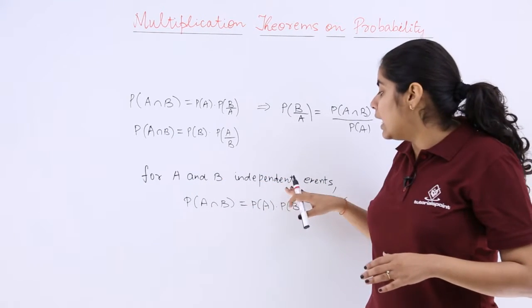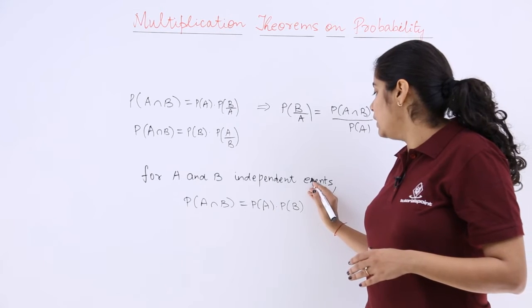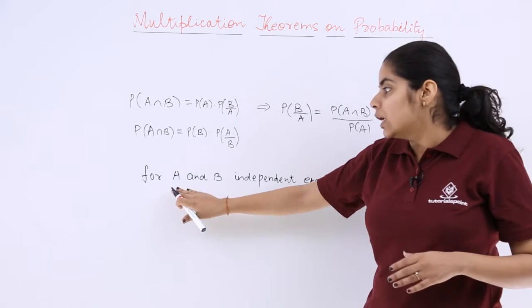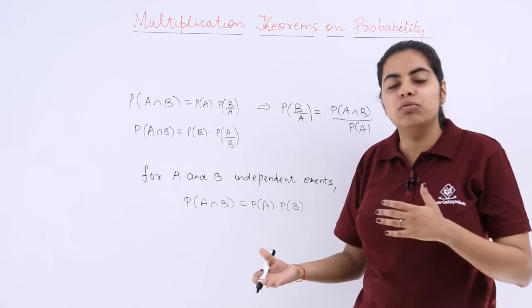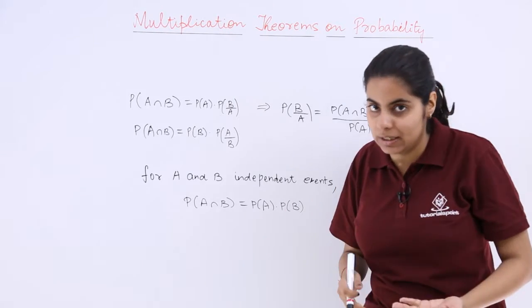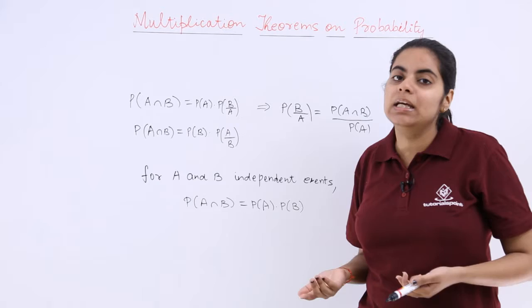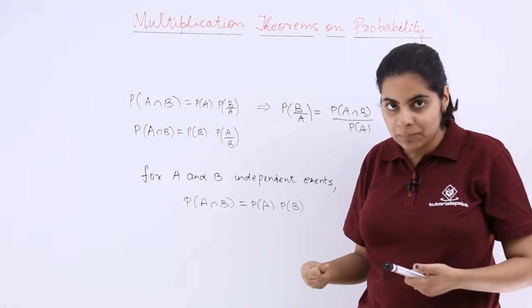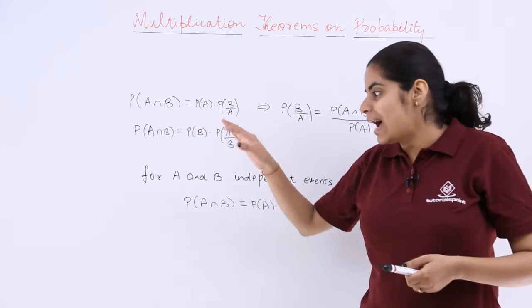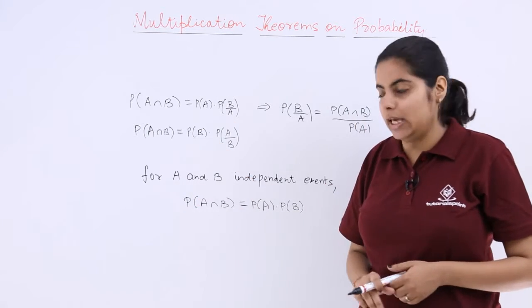Now if A and B are independent events, independent events are the ones which do not have any influence on one another. That means if A occurs, it is not affected by B in any manner, it does not depend upon B. And if B occurs, it does not depend upon A.